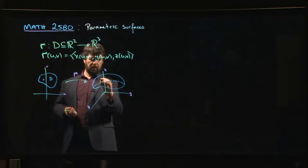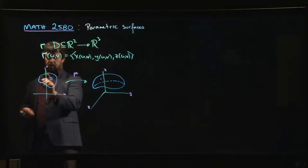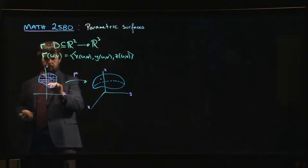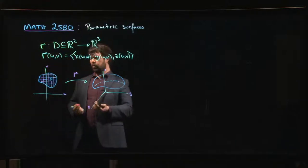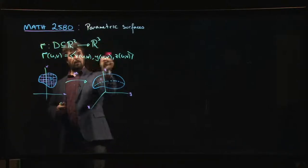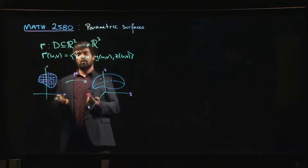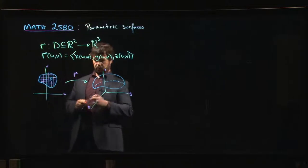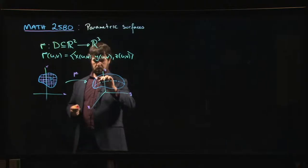Any point (u,v) in your domain will correspond to some point (x,y,z) on the surface. If we draw in lines of constant v or lines of constant u, those are going to correspond to curves on the surface. If we hold one of the two variables constant then we have a parametric curve.